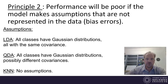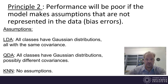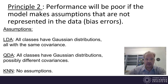Principle number two: performance will be poor if the model makes assumptions that are not represented in the data. These are called bias errors. If we're using a data set where the classes don't have Gaussian distributions, or the decision boundaries between the classes really need to be something other than linear or quadratic, then LDA and QDA will work poorly. The only way to get rid of bias errors is to pick an algorithm that will be able to tune to the characteristics of the data.